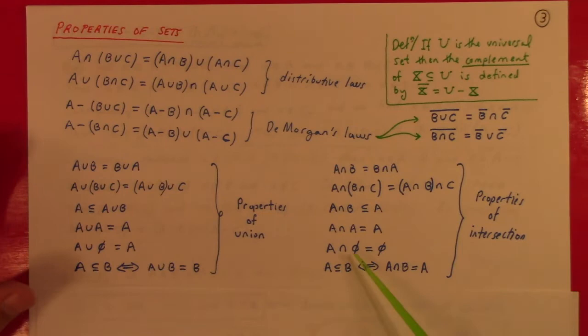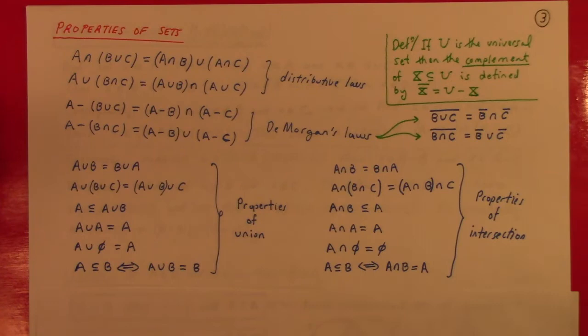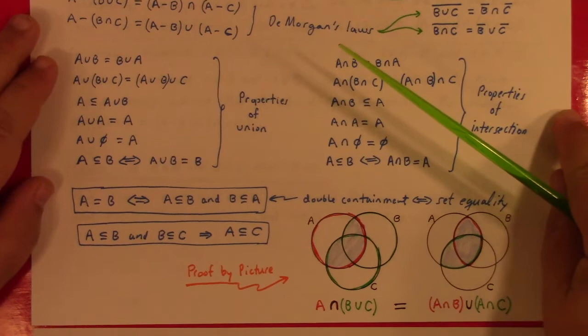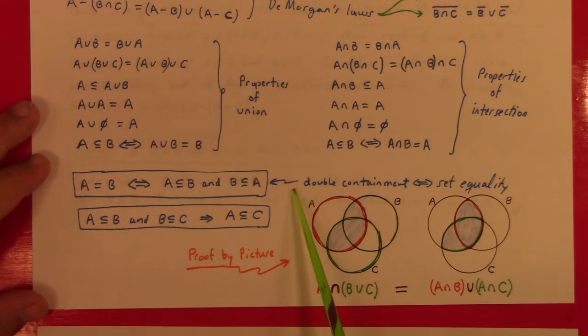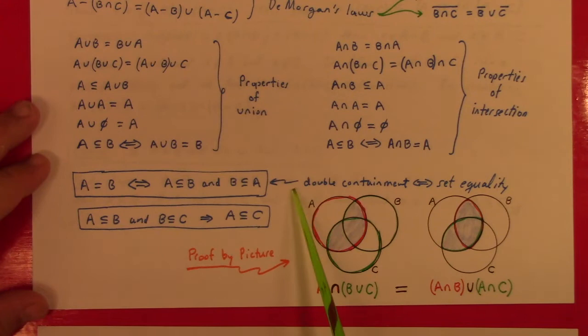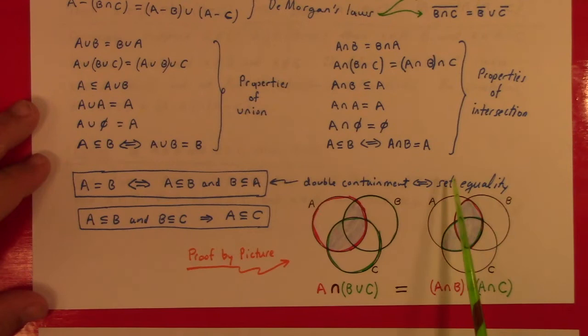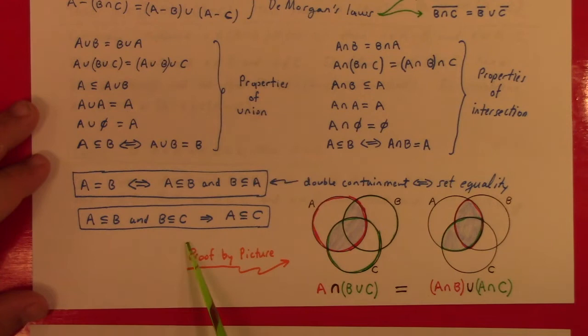The empty set is a lot like zero for arithmetic — zero times anything is zero, and empty set intersect anything is the empty set. Union is kind of like addition: A ∪ ∅ = A. An important one we need for careful proofs: A = B as sets if and only if A ⊂ B and B ⊂ A. This is the double containment characterization of set equality. And transitivity of subsets: A ⊂ B and B ⊂ C means A ⊂ C.